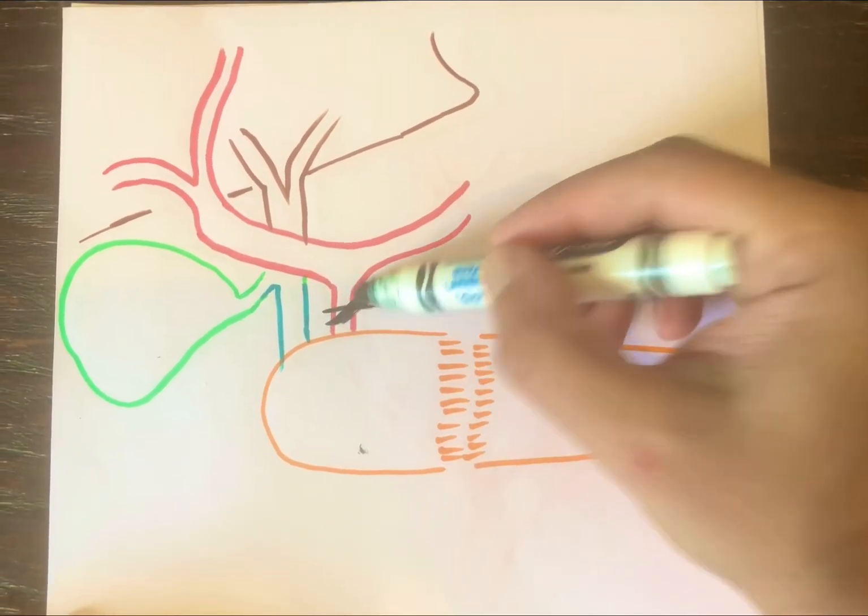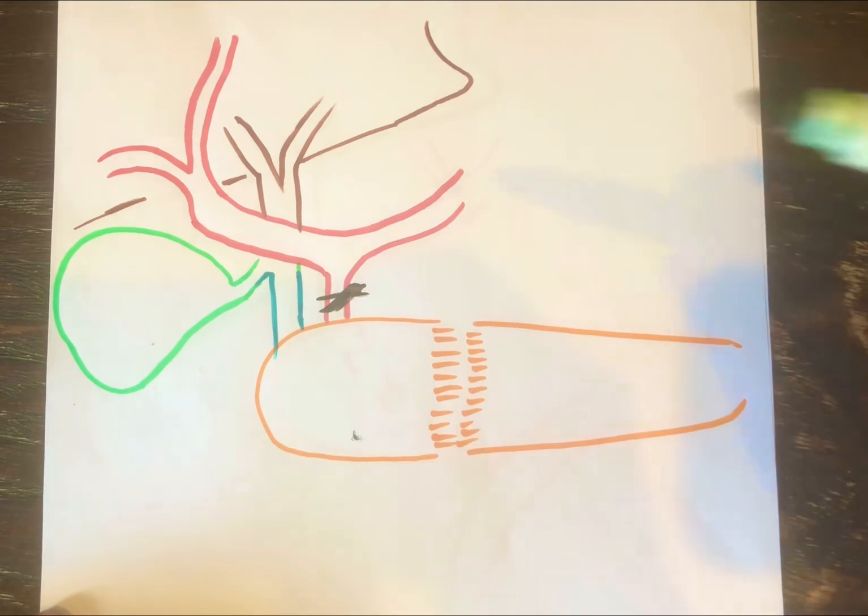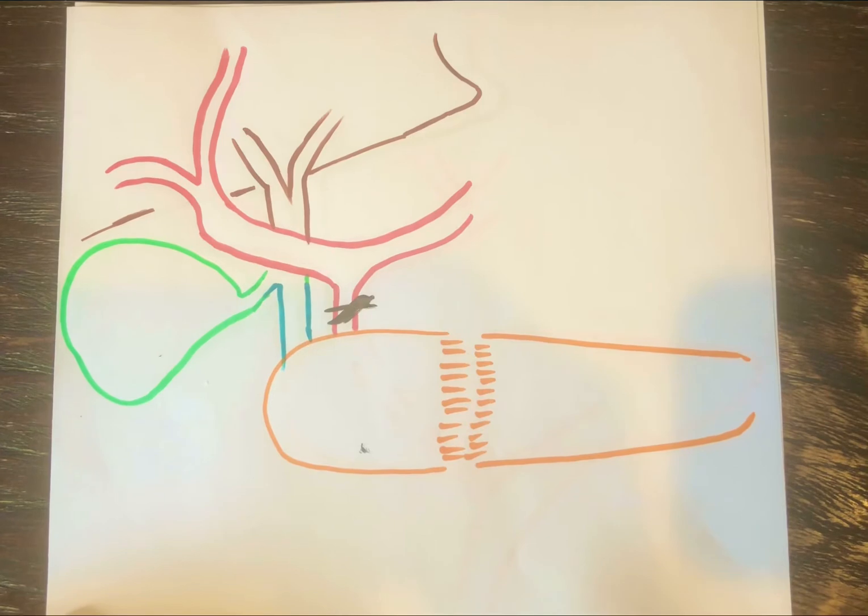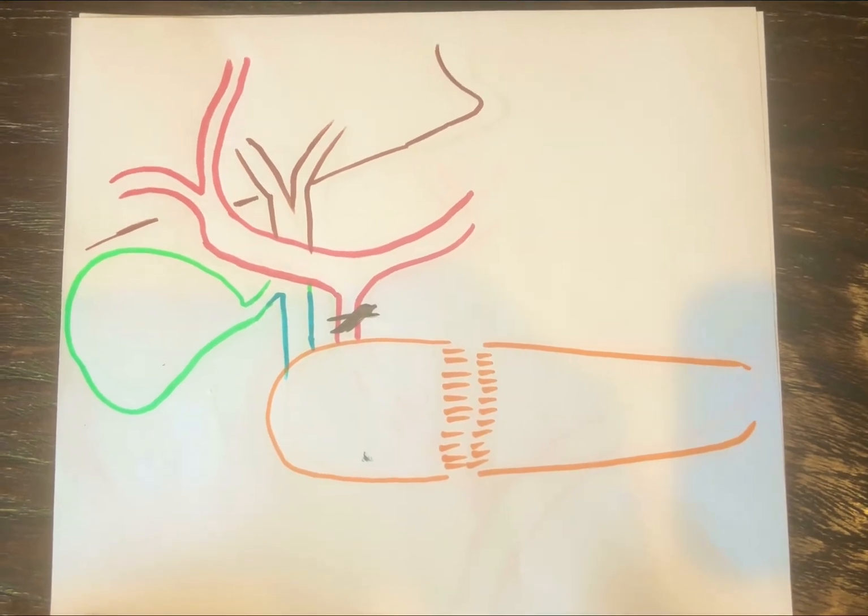So then you can clamp it. And that is how you identify and then clamp the GDA and then tie it off before you confirm.